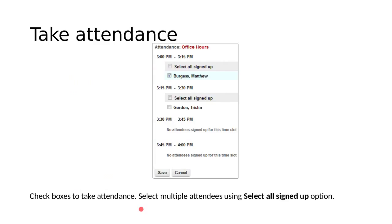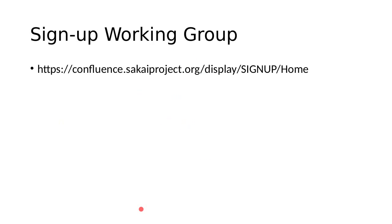You can take attendance using the sign-up tool by going in and checking off members who attended the event. There's an option to select all signed-up members at once if you need to mark all attendees in a particular group. There is also a link to the sign-up working group Confluence Wiki as an additional resource for more information on sign-up.